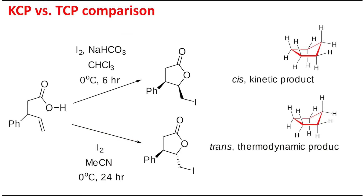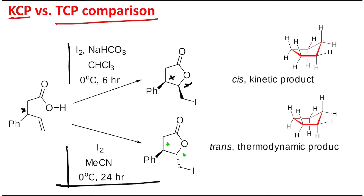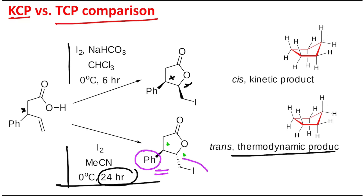In this context, there is the concept of KCP (kinetically controlled product) versus TCP (thermodynamically controlled product). In the product, two stereoisomers are possible. In the starting material, only one stereoisomer was present. The second product is the TCP or thermodynamically controlled product — the reaction time is longer and the solvent conditions are more demanding. Thermodynamically controlled products require more time and are more stable.